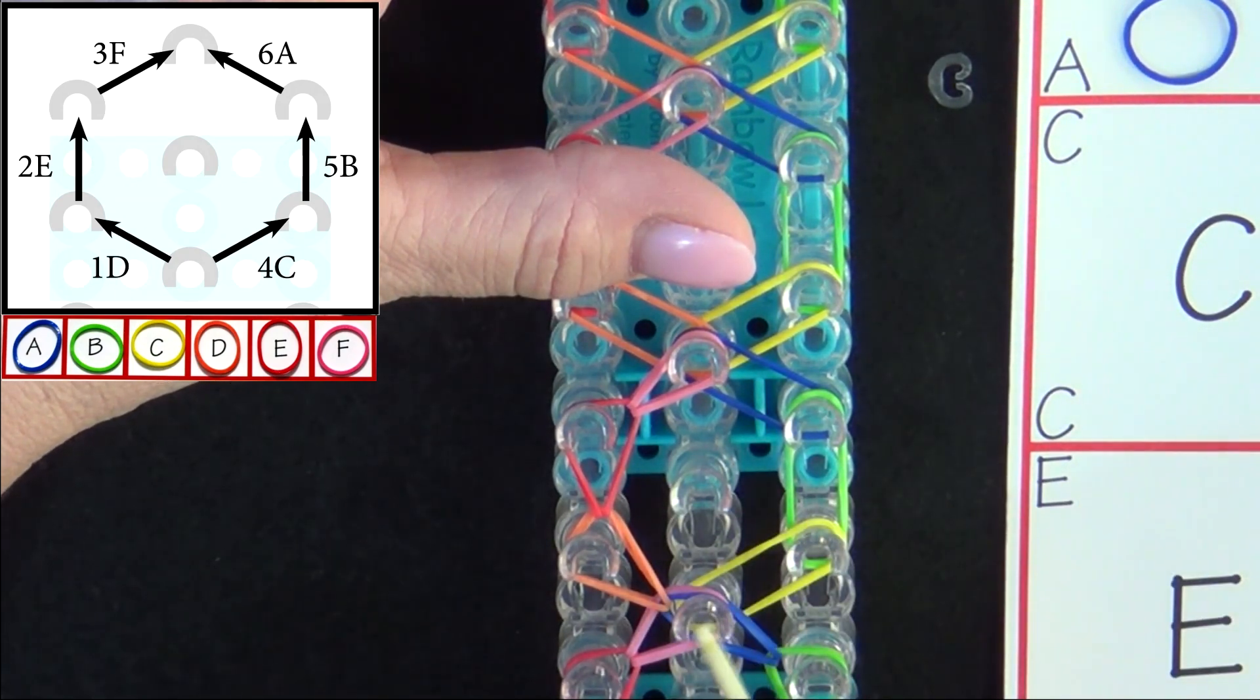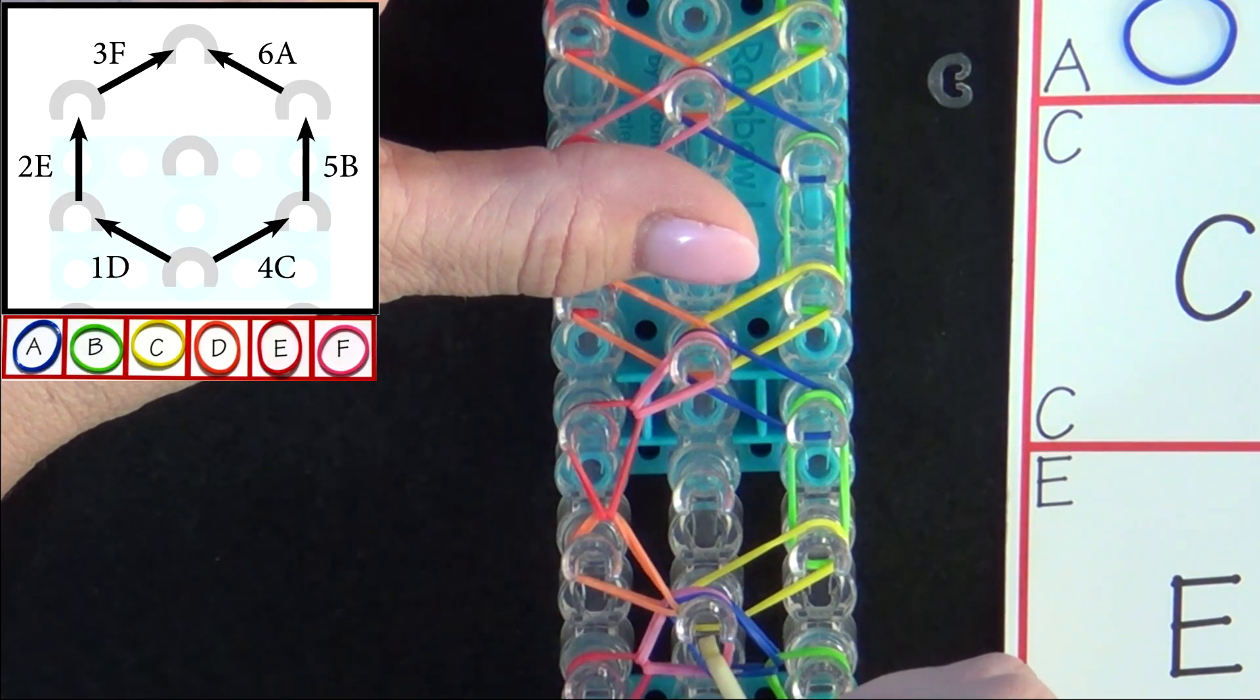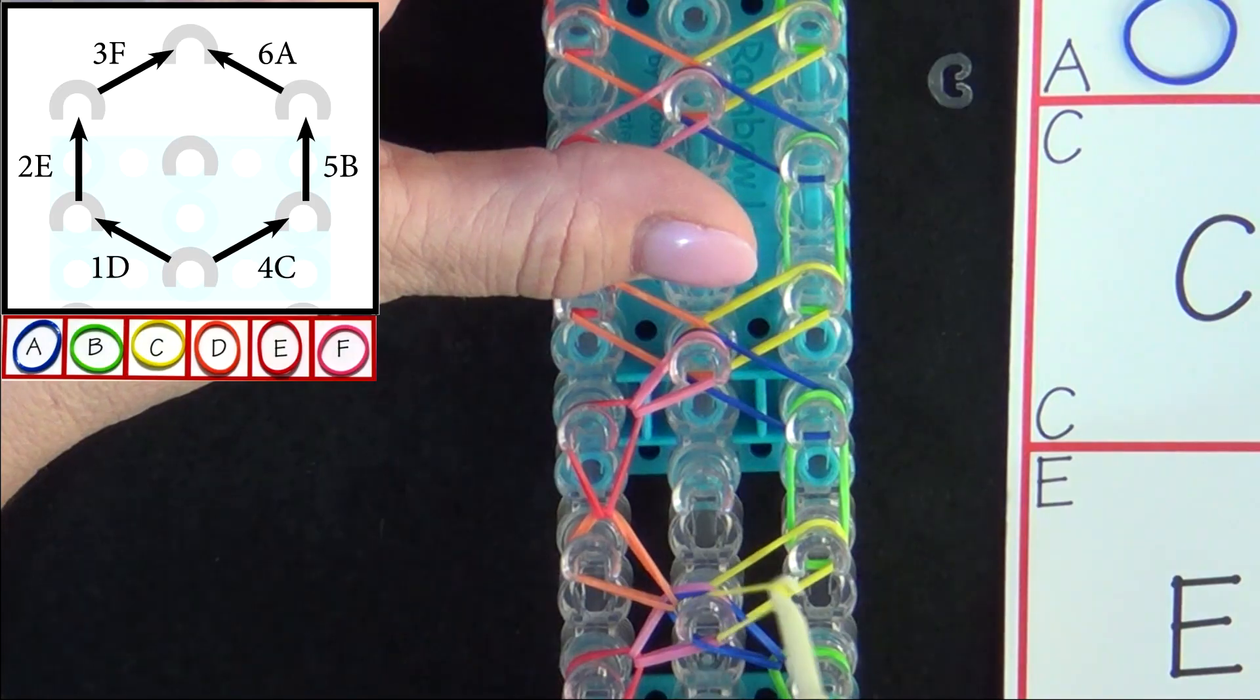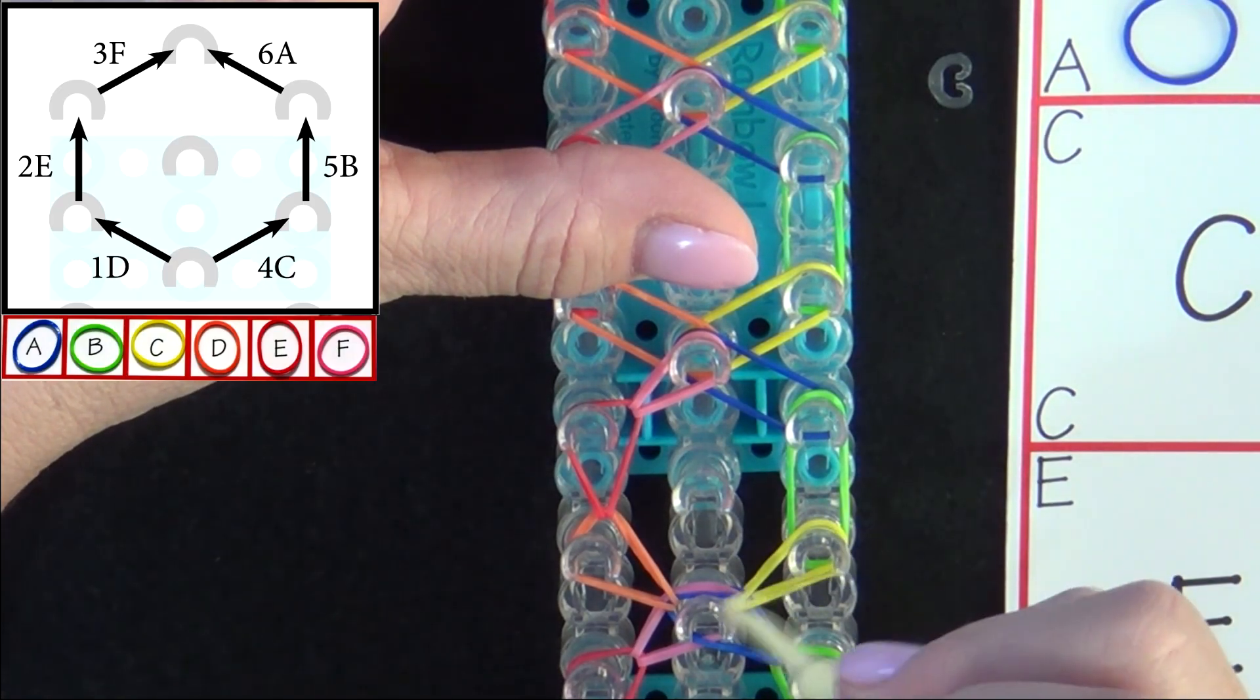We'll loop band 4C to the right. Pull all the bands above the C band back. Grab it with your hook and pull out to the right.